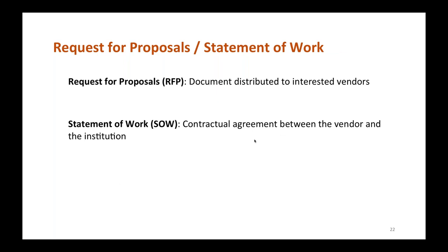To clarify the differences between requests for proposals and statements of work: an RFP is distributed to a selection of vendors, who then submit a proposal to the institution for review. When a vendor is selected for the project, a final statement of work is drafted, serving as the contract between the vendor and the institution.